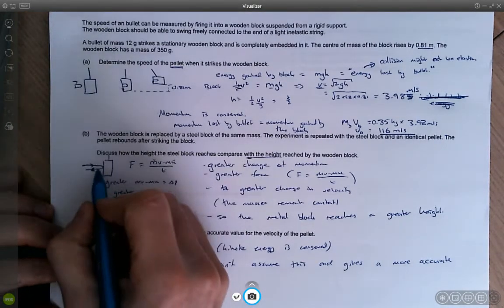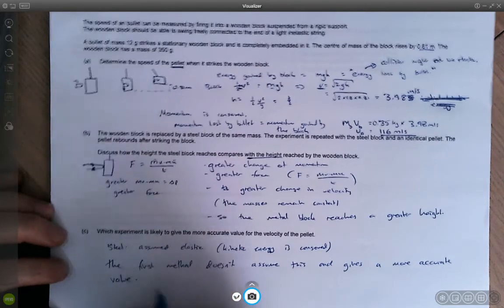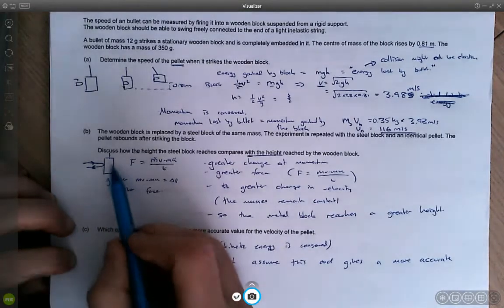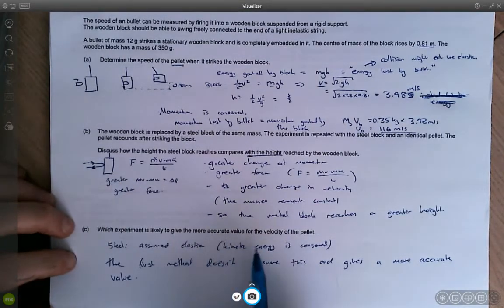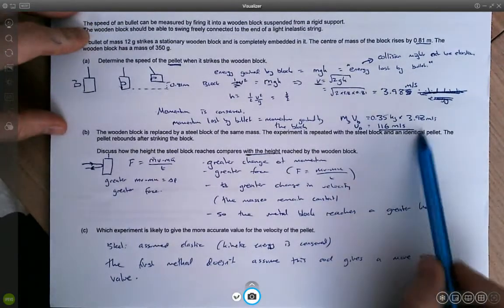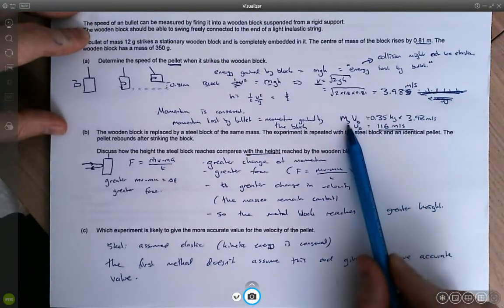So why is energy lost? Well, it could be that the bullet gets deformed a little bit or some of the kinetic energy gets transferred into the thermal store of the steel block. And that's why kinetic energy isn't conserved. Now one final question for you. Can you spot the the slight mistake I've made in this question here?